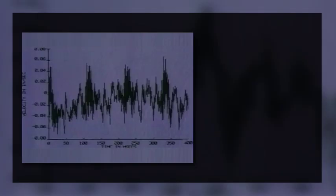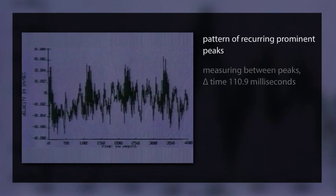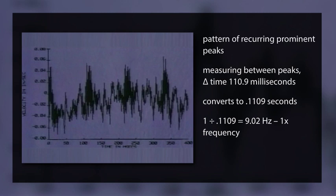Let's confirm our finding in the time domain. We find a pattern of recurring prominent peaks. Measuring between the peaks, we find a delta time of 110.9 milliseconds, which converts to 0.1109 seconds. Taking the reciprocal, 1 divided by 0.1109 equals 9.02 hertz rounded, which very nearly approximates the one-times frequency. The predominant vibration is the turning of the shaft, nothing else.